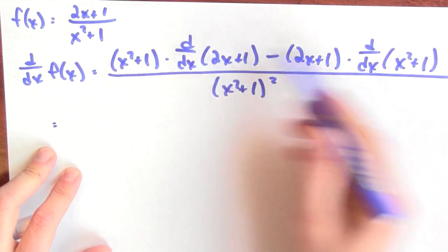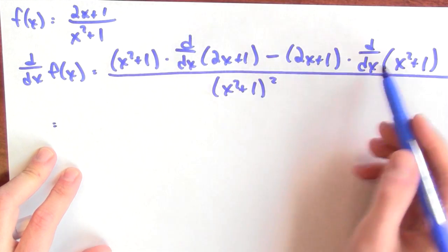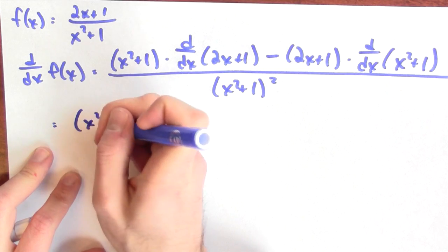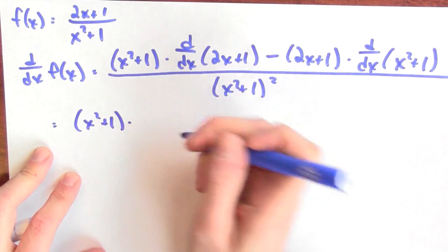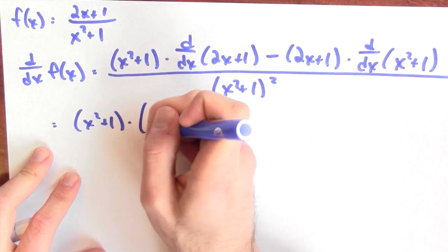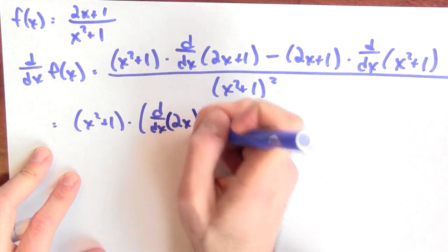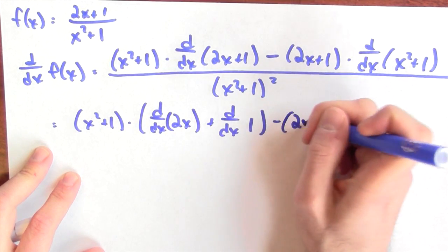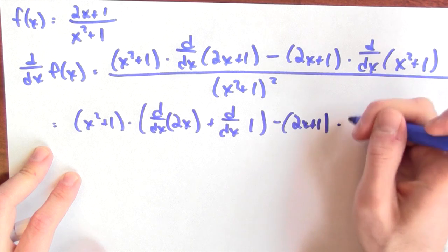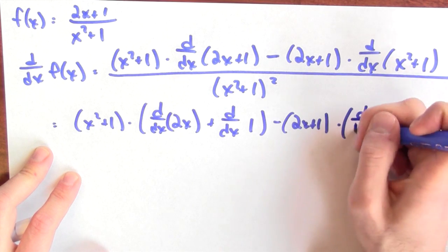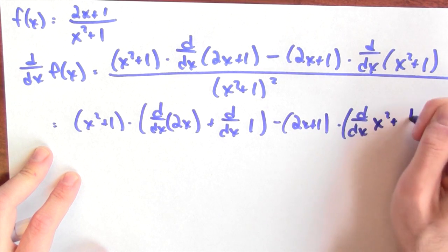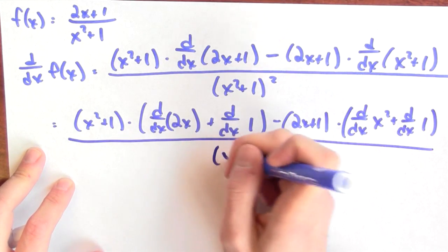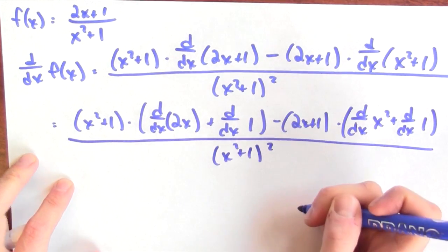Now, I've calculated the derivative of this quotient in terms of the derivatives of the numerator and denominator. We can simplify this further. x squared plus 1 times the derivative of this sum is the sum of the derivatives. It's the derivative of 2x plus the derivative of 1 minus 2x plus 1 times, and again, the derivative of a sum. So, the derivative of x squared with respect to x plus the derivative of 1. And it's all divided by the denominator, the original denominator squared.